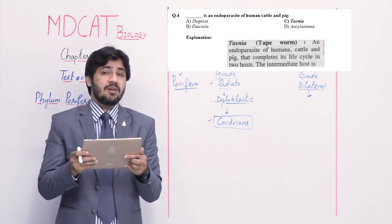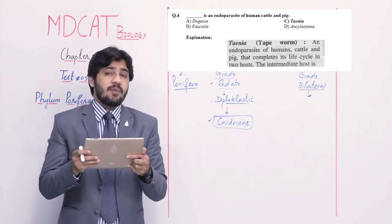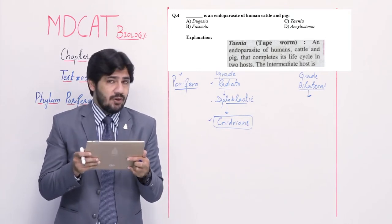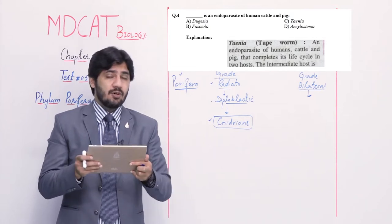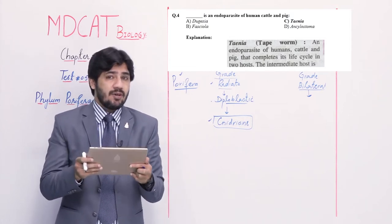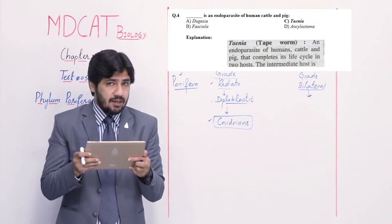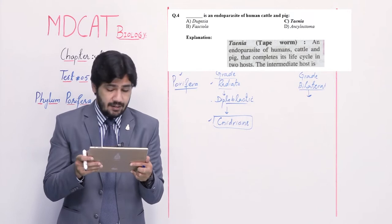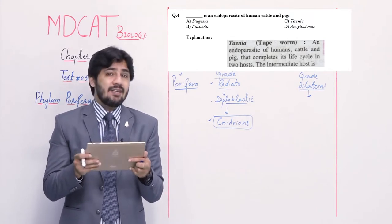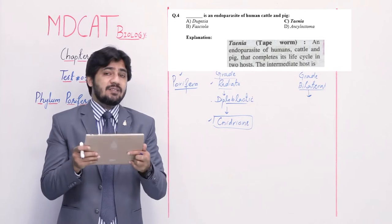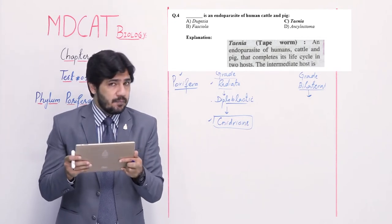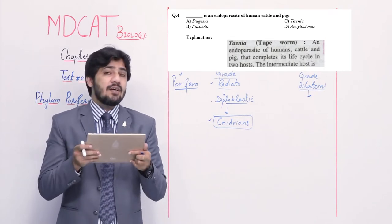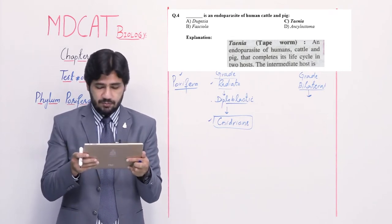Question number 4: Planaria is free living so alpha is not correct. Fasciola is a parasite of sheep, and also found in humans and snails — the question mentions cattle and pig and humans, so beta is not right. Taenia — common name tapeworm — is a parasite of humans, cattle, or pig, so the right option is charlie (Taenia). Delta — Ancylostoma — is a parasite of humans, so right option remains charlie.